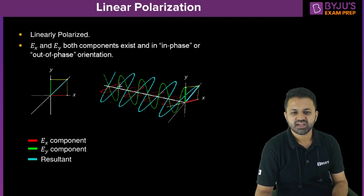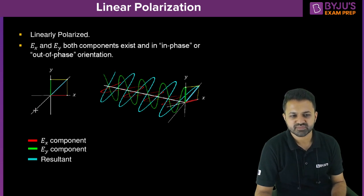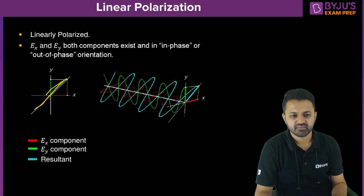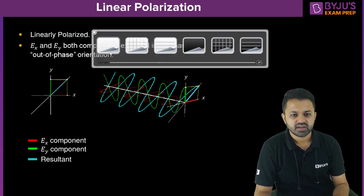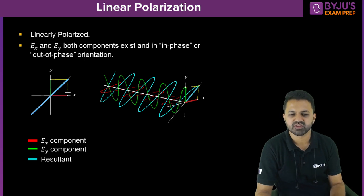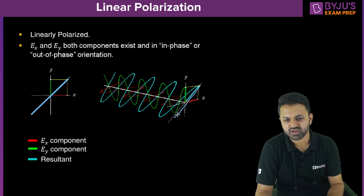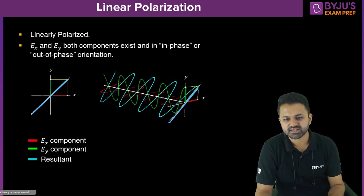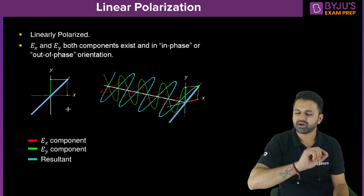Now, for linear polarization, if both x and y components are present, then it will be moving along a diagonal direction as we have already seen. This blue line is the path. If both x and y are there, it follows either one diagonal or the other, as shown in this diagram. So in this way we can visualize linear polarization.